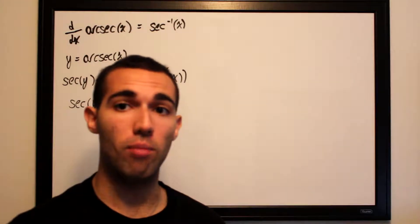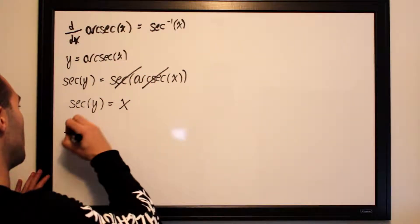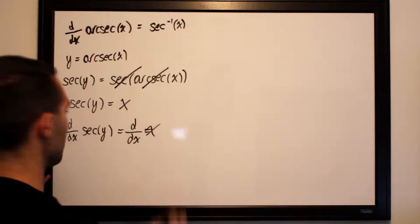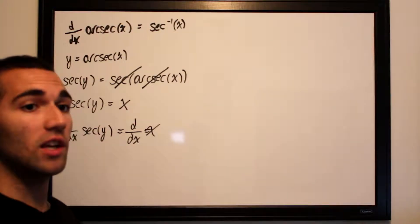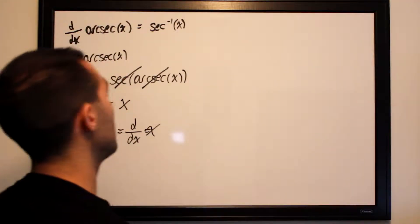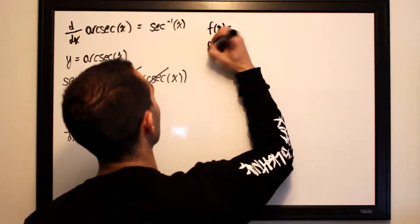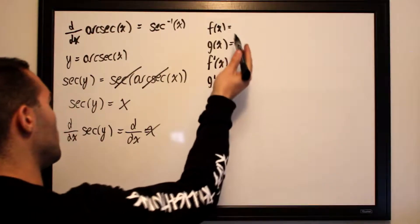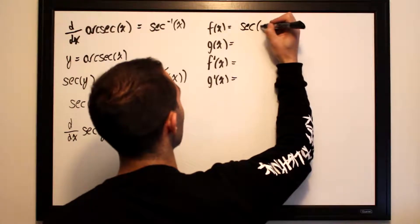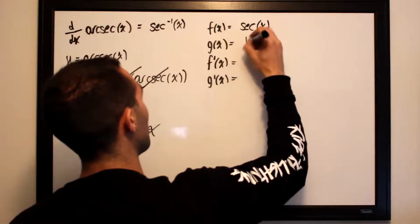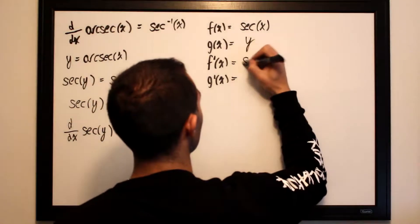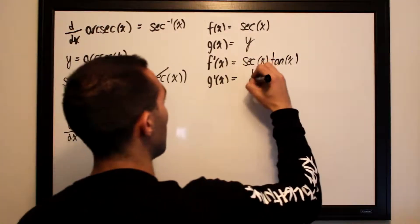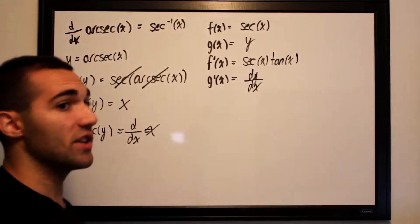Now we take the derivative of both sides with respect to x: d/dx of secant of y and d/dx of x. Since y is trapped within a secant function, we use the chain rule. Our outer function is secant of x, our inner function is y, f prime is the derivative of secant of x which is secant of x times tangent of x, and g prime is the derivative of y which is dy/dx — essentially what we want to isolate.